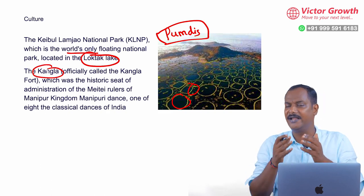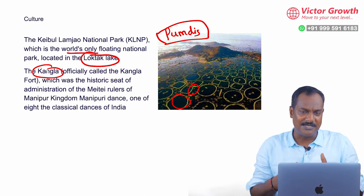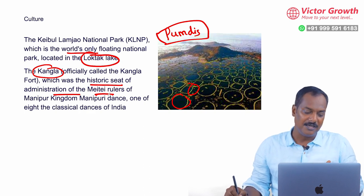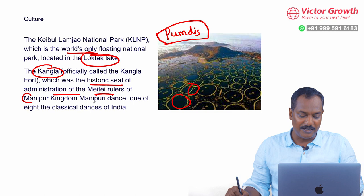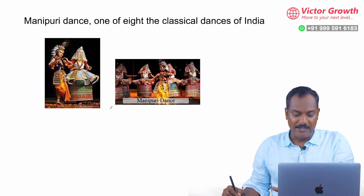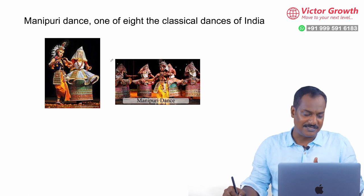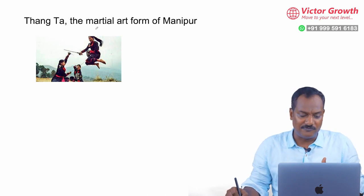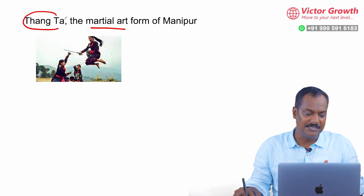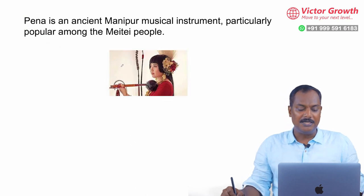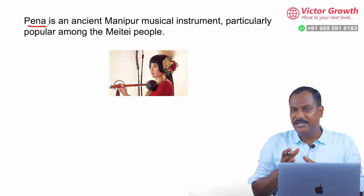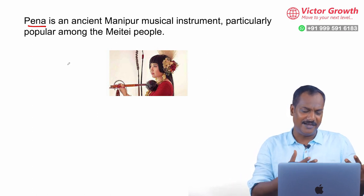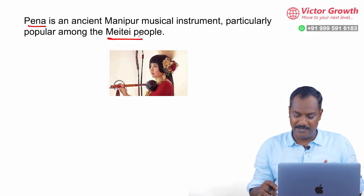Kangla Fort, which I mentioned earlier, is the official kingdom's palace, now a museum and historic seat of administration of the Meitei rulers. We also have Manipuri dance, one of the eight classical dances of India. Manipur is also famous for martial arts. The martial art found in Manipur is known as Thang-Ta. Then there is Pena, an ancient musical instrument of Manipur — a kind of violin, very popular among the Meitei people.